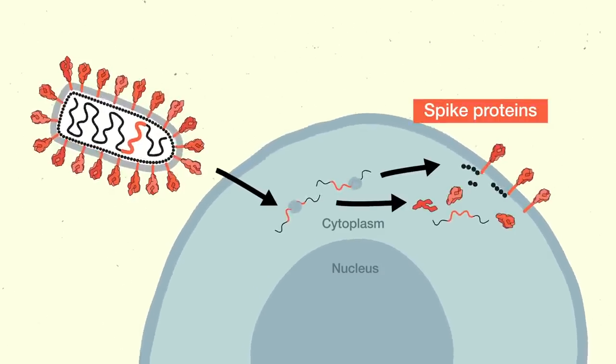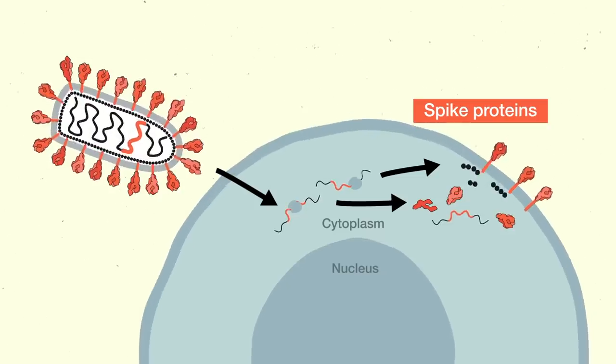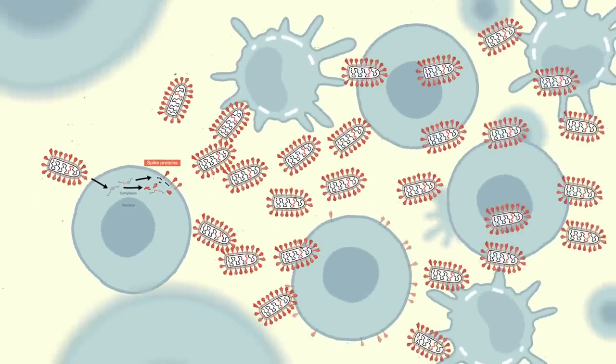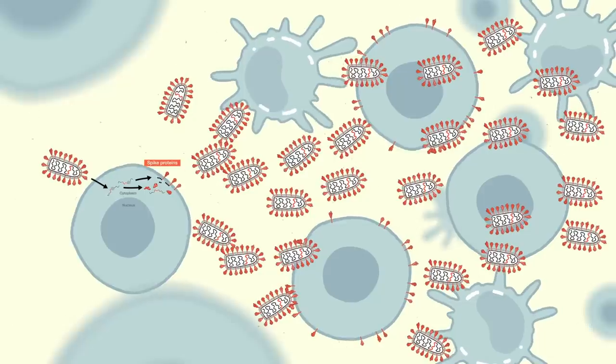But because RVSV is replication-competent, this platform mimics a real viral attack more closely. This is the same platform that Merck used to develop a vaccine for Ebola that was approved by the FDA last year.